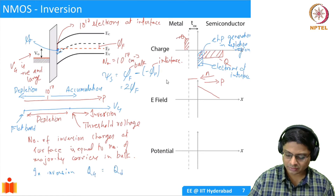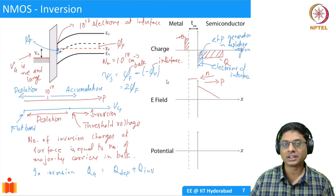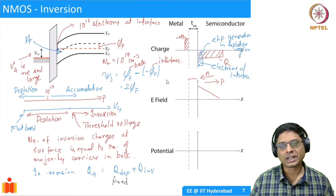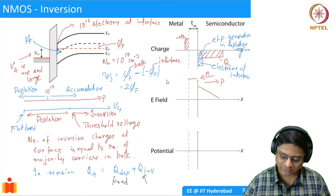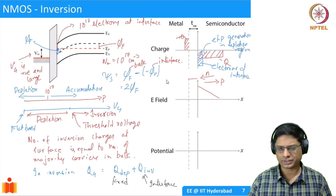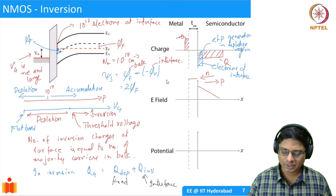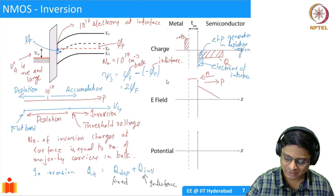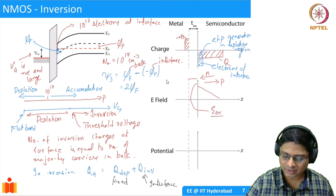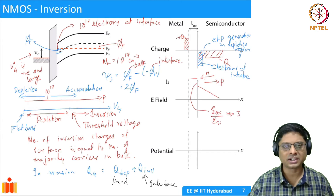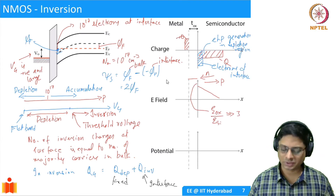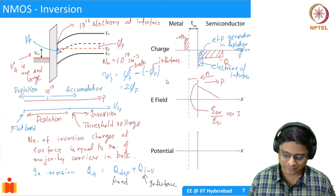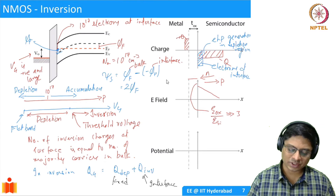In inversion, Q_G equals Q_depletion plus Q_inversion. In the semiconductor there are two types of charges: the depletion charge, which is fixed, and the electron-hole pairs that are generated and free to move — electrons come toward the interface. There is a very thin layer of inversion charge right at the interface. Because of that, if you look at epsilon_oxide divided by epsilon_silicon, this will be much greater than three in inversion — we will give you this as an exercise with a nanoHUB tool. The inversion charge is at the interface; holes go into the bulk.